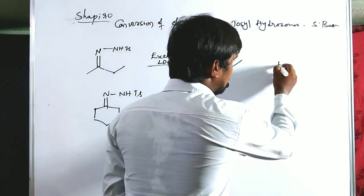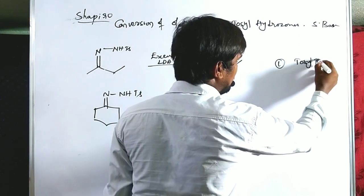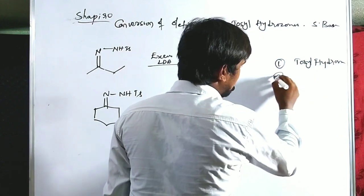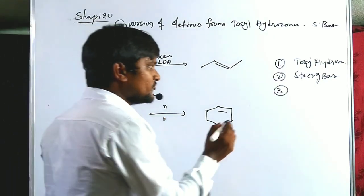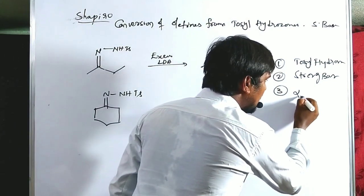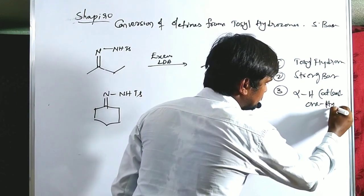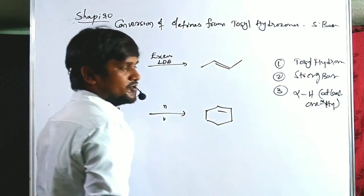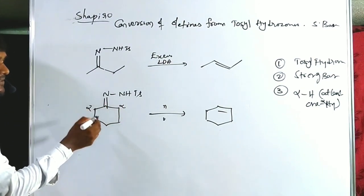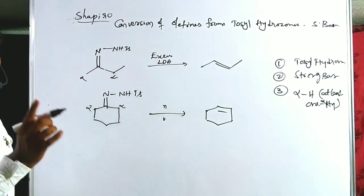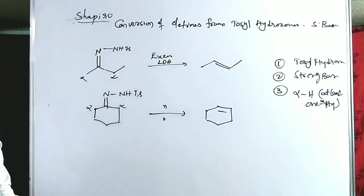Let's remember the conditions again. The first condition is tosyl hydrazone. The second condition is a strong base. The third and very important condition is that the tosyl hydrazone must have at least one alpha hydrogen — that is, at least one C-H bond adjacent to the tosyl hydrazone carbon is required to fulfill the Shapiro reaction.